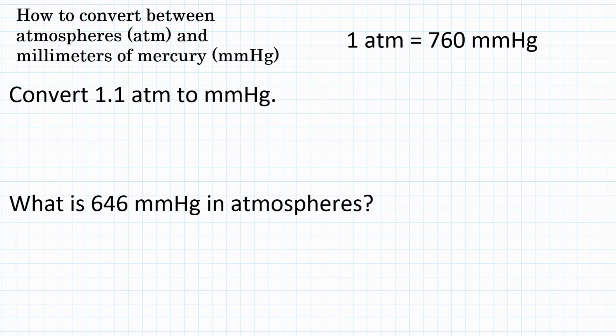How do we convert between atmospheres and millimeters of mercury? Pressure has many different units. One unit is called atmospheres, abbreviated as ATM, and another is called millimeters of mercury, abbreviated mmHg. So how do we convert between those two units?